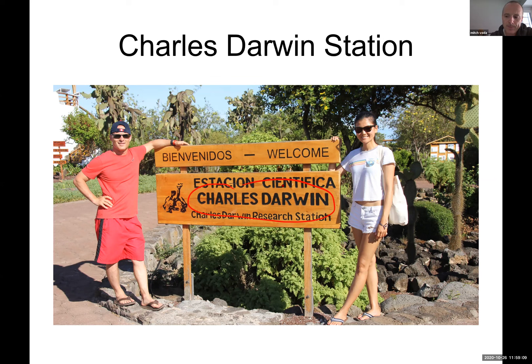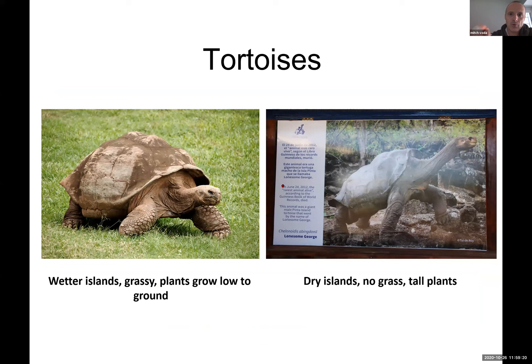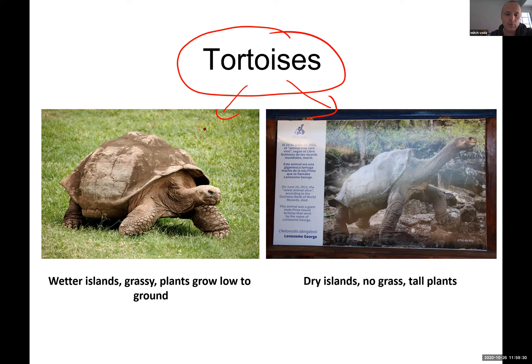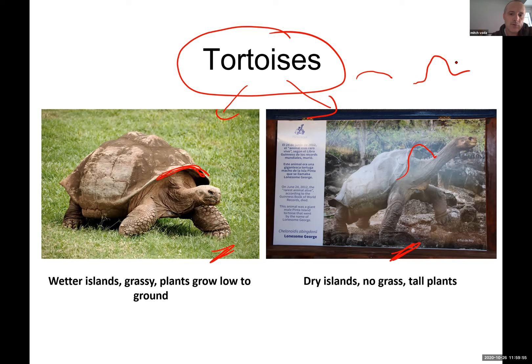I actually worked at that institute for a couple of days when I went there. Here you can see what these islands are famous for: tortoises. When you look at them, you see something different. Both are basically terrestrial — they live on land. When you look at their shell or carapace, you notice the way it looks here versus here. This one is more rounded; the other one is more like a saddle. That's where the name of the islands comes from — Galápagos, from galapago, meaning saddle.